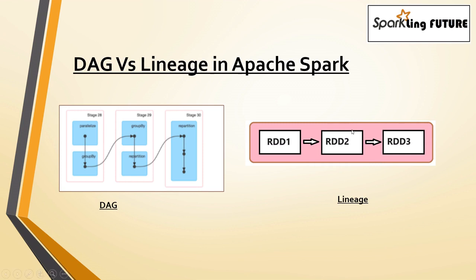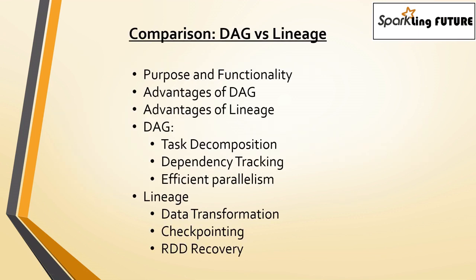Why I mention this fault tolerance — if, while your Spark job is running, any step fails, it will immediately, using the lineage, recompute the lost RDDs from the previous step. That is how the DAG and the lineage work.